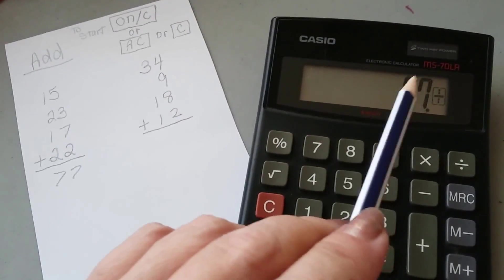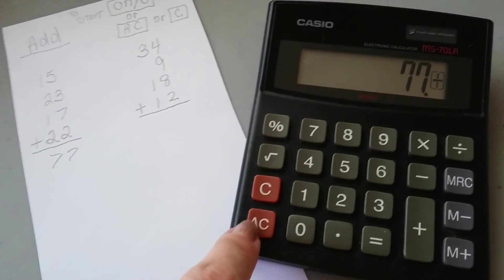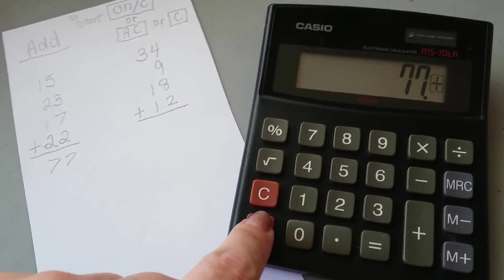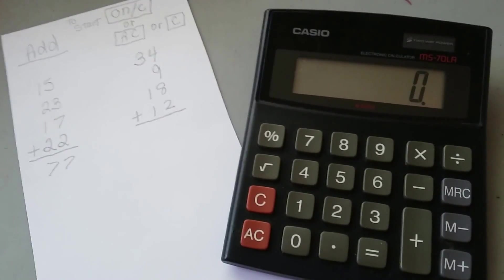We still have our 77 in the calculator from when we added these. And if I push this AC or the C button, that will clear it all out. So it's a zero again.